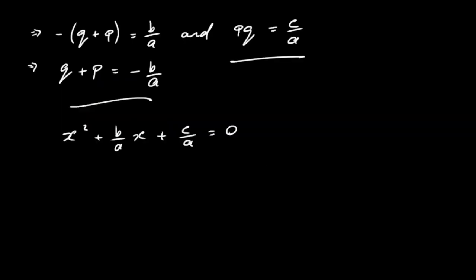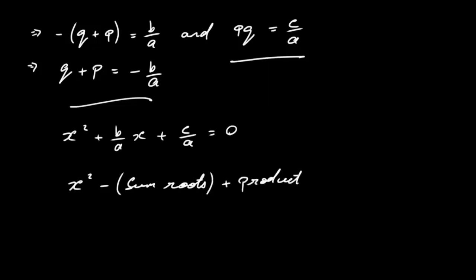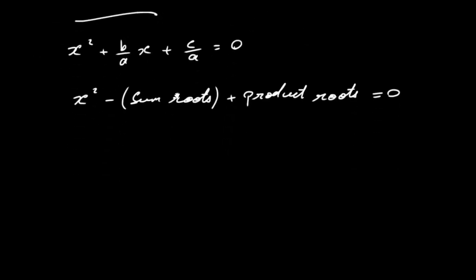So if we add the two roots, q plus p, that gives us minus the coefficient of x. If we multiply the two roots we get the term independent of x. We can write the general quadratic as x squared minus (sum of the roots)x plus (product of the roots) equals zero.